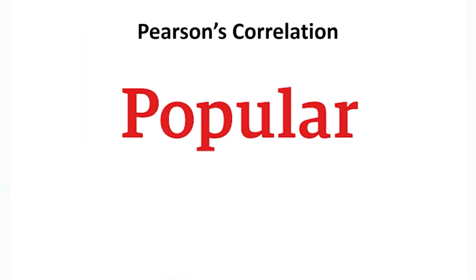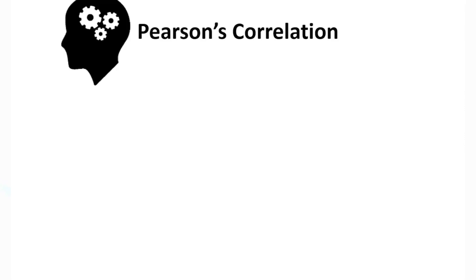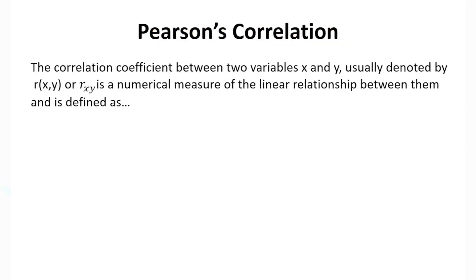Now let's talk about the most popular type of correlation — Pearson's correlation. It is denoted by a lowercase r and is a numerical measure of the linear relationship between variables x and y. It is important to note that we are specifically talking about a linear relationship, and that's something we need to emphasize every time we are interpreting Pearson's correlation.